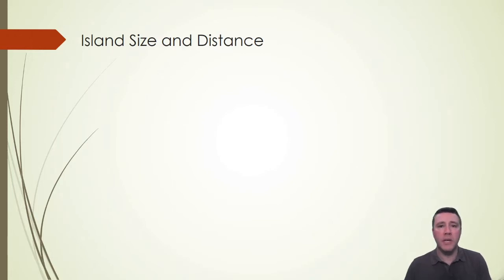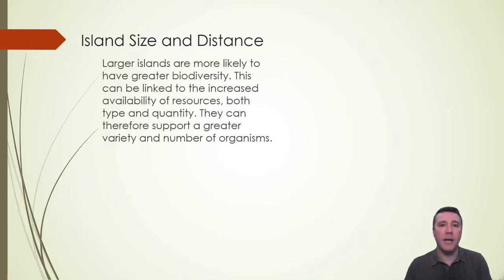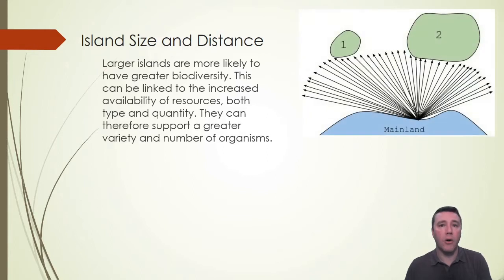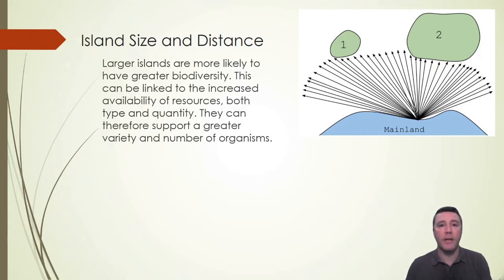All else being equal, island size and the biodiversity on that island are directly proportional — the larger the island, the greater biodiversity that island is likely to have. This can be attributed to the fact that larger islands are more likely to have a greater quantity and variety of abiotic resources. That, of course, would allow for a greater quantity and variety of producers, supporting a greater quantity and variety of consumers.